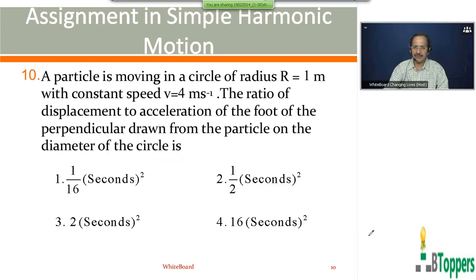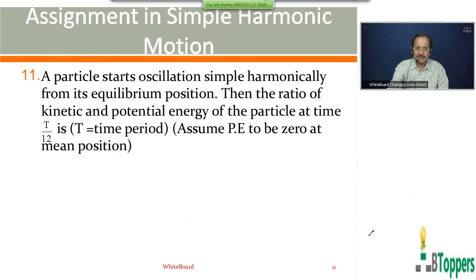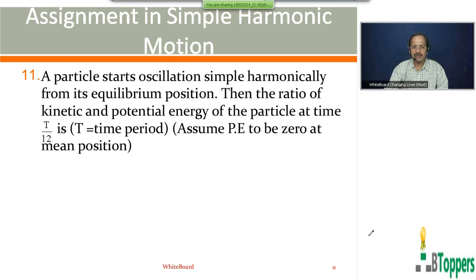For question number 10, the first option is the answer. See the next question, question number 11. A particle starts oscillating simple harmonically from its equilibrium position, and the ratio of the kinetic and potential energy of the particle at time T/12 is asked. Assume potential energy is 0 at the mean position.